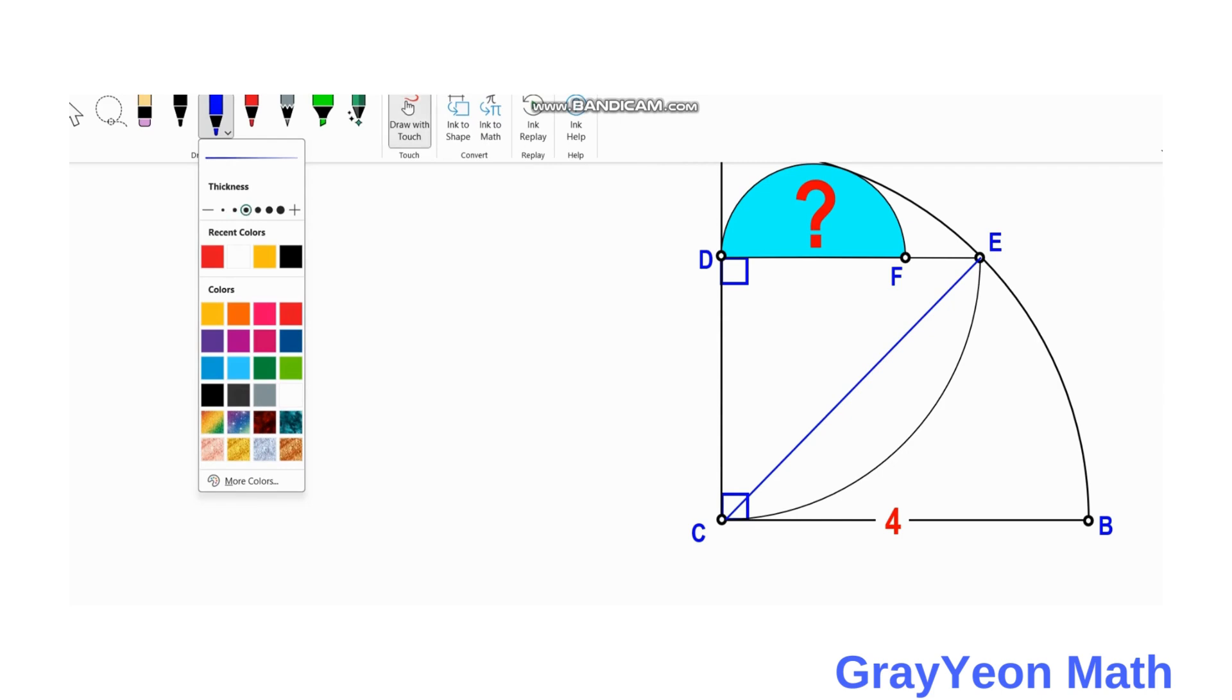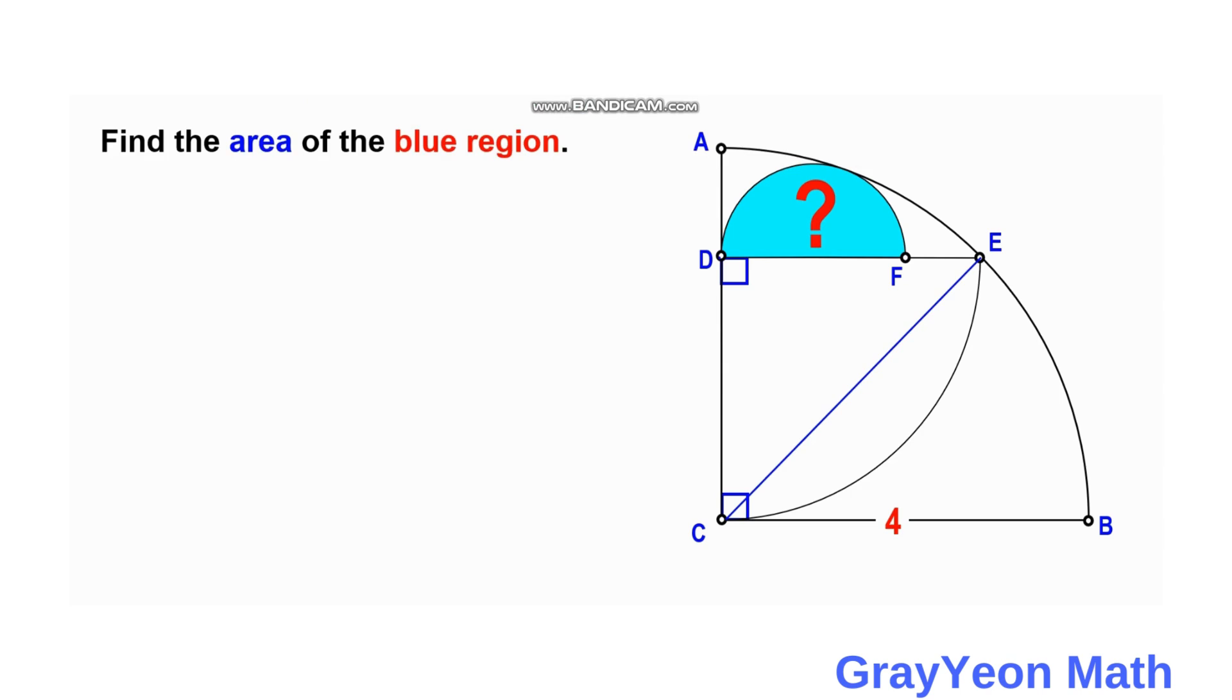The triangle is formed by legs CD and DE. Since this is from a quarter circle, then this triangle is an isosceles right triangle. Since the radius is 4, CE will be equal to 4.